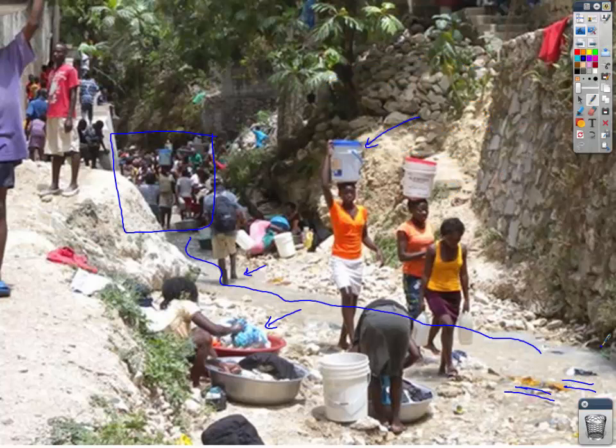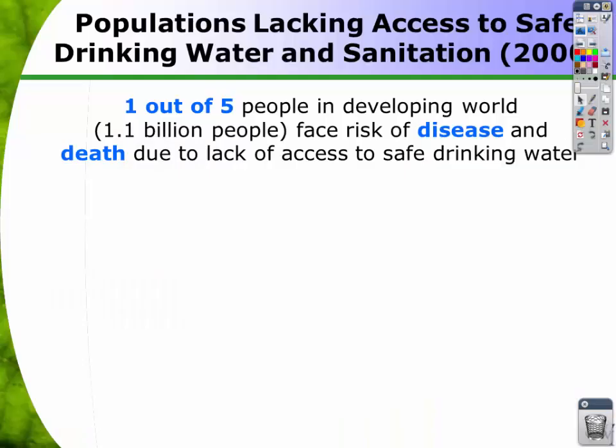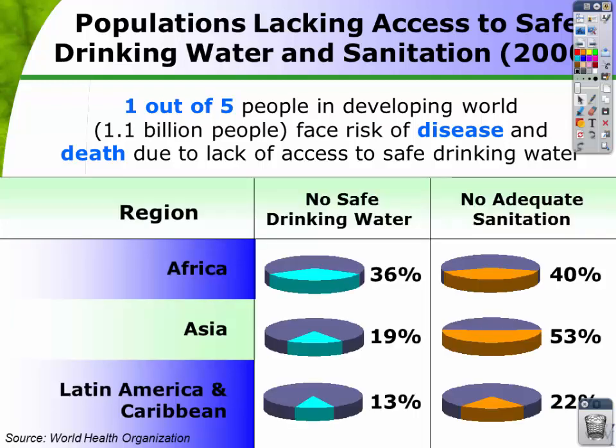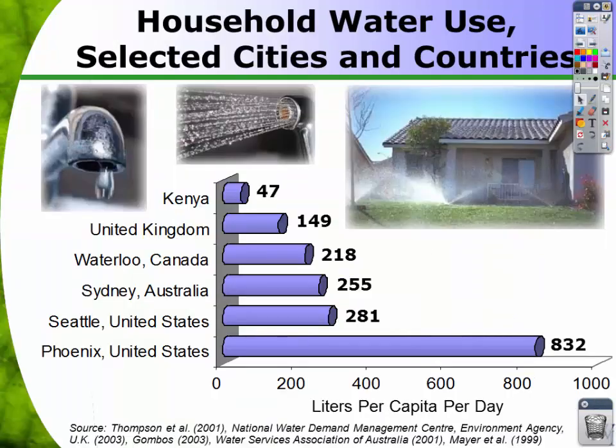We are so lucky. To put a couple of numbers to this: one out of five people in the developing world — that's over a billion people — face risk of disease and death due to lack of access to safe drinking water. In Africa, almost 40% of people don't have safe drinking water, and almost half have no adequate sanitation. In Asia the numbers are a little bit better, but remember Asia's population is exploding — over half have no adequate sanitation. A big, big problem around the world.